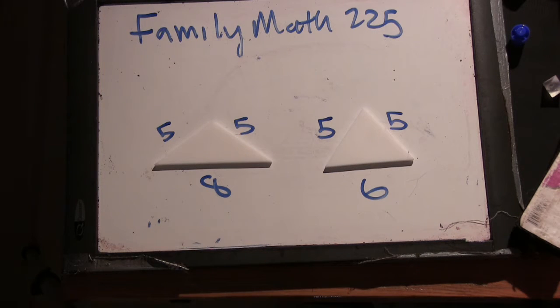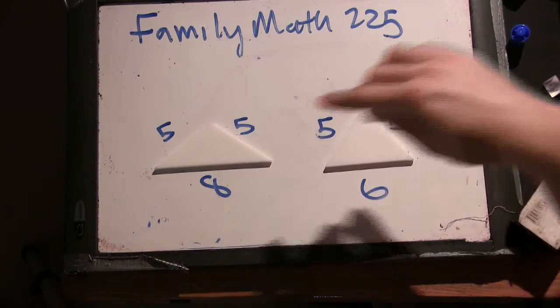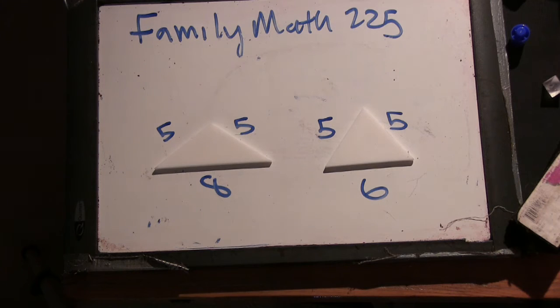But our friend Paula shared a neat blog post last night and it reminded me of this puzzle. And so overnight I 3D printed some shapes. So here I have a 5-5-8 triangle. And here I have a 5-5-6 triangle. And the puzzle is to try to figure out which shape has the most area.